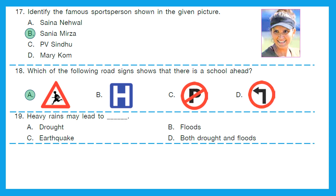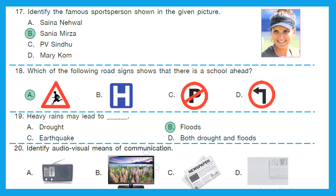Question 19: Heavy rains may lead to drought, floods, earthquake, or both drought and floods? When there is excess rain it causes floods. Option B is the right answer. Question 20: Identify audio-visual means of communication. It should have audio and visual both. Radio — only hear. TV — hear and see both. Newspaper — only see. Postcard — only see. So audio-visual means of communication is option B, television.